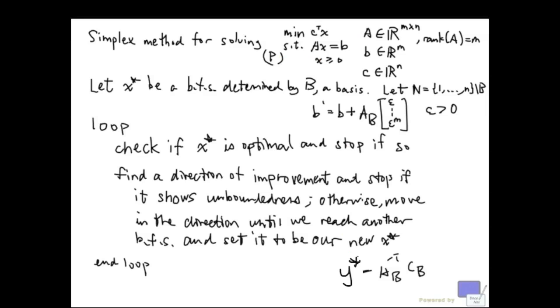And so, this y star will satisfy complementary slackness with the x star determined by B for the original system, Ax equal to b. And what this means is, as long as epsilon is small enough so that every basis that determines a basic feasible solution for the primed system, it also determines a basic feasible solution for the original system. If epsilon is chosen in such a way that that is the case, at the end of this algorithm, the conclusion will also apply to the original problem.